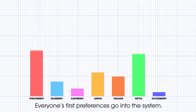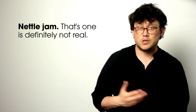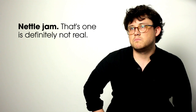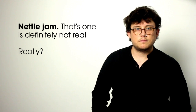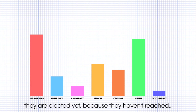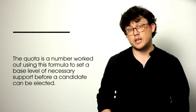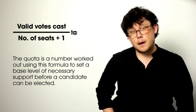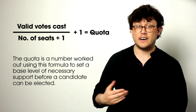Everyone's first preferences go into the system. Clearly, strawberry and nettle are in the lead — nettle jam, that one's definitely not real. They may be the most popular, but that doesn't mean they're going to get elected yet, because they haven't reached the quota. The quota is a number worked out using this formula to set a base level of necessary support before a candidate can be elected.